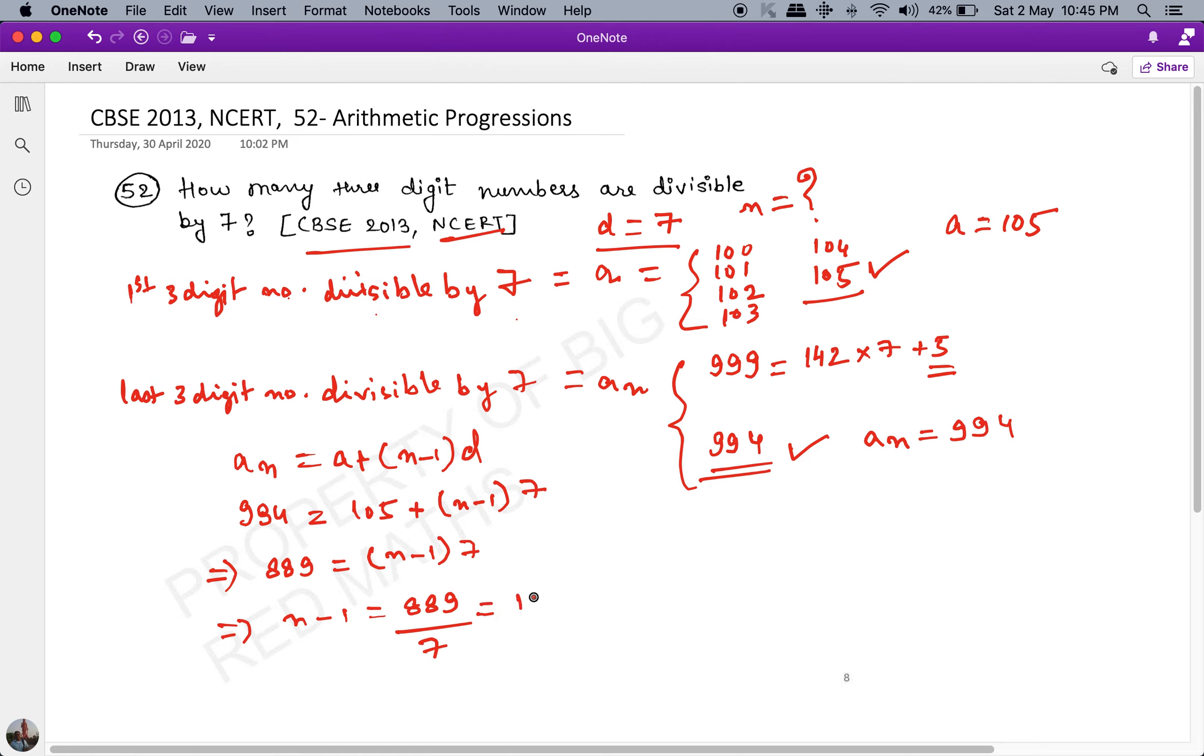Dividing: 7 × 1 = 7, 18, 7 × 2 = 14, 49, 7 × 7 = 49. So n - 1 = 127, which means n = 128.